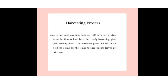In the harvesting process, jute is harvested any time between 120 to 150 days after sowing, once the flowers have shed. Early harvesting gives good-quality fibers. The harvested plants are left in the field for three days for the leaves to dry up, leaving only the stems remaining.